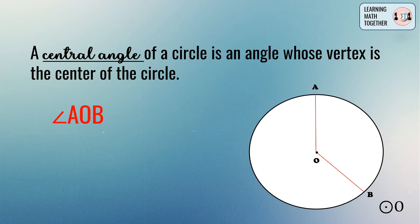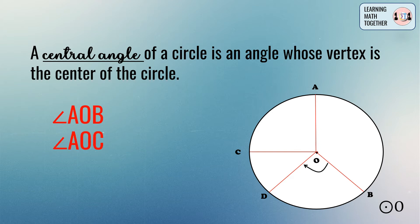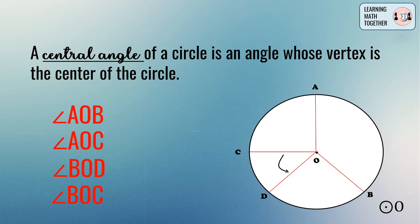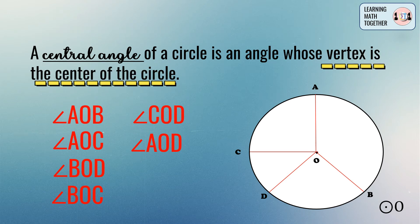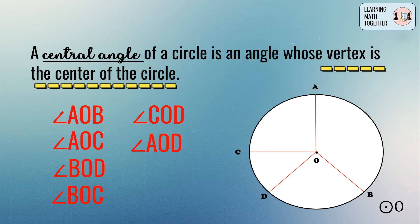Now we can draw more central angles in this circle. Let's name the central angles in circle O. We have central angle AOC, central angle BOD, central angle BOC, and central angle COD. Again, these are called central angles because the vertex of these angles is the center of the circle.